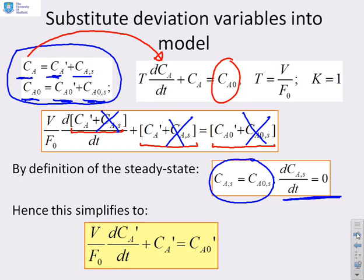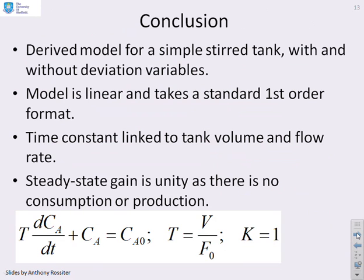Having done that, the model reduces to: (V/F0)·(dCA′/dt) + CA′ = CA0′. This is the same equation as before, which isn't surprising because we have a linear system and can use superposition. However, in the next video, when we move to scenarios where the system isn't linear and we're linearising about an operating point, this trick of using deviation variables becomes much more important. In conclusion, we've derived a model for a simple stirred tank with and without deviation variables. The model is linear and takes a standard first-order format. The time constant is linked to the tank volume and flow rate, and the steady-state gain is unity as there's no consumption or production.